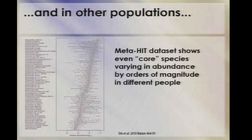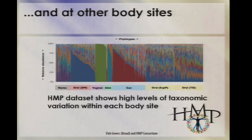MetaHITS saw the same thing in other populations. Even the species they define as core vary in abundance by orders of magnitude between different people, so anything that makes up 10% of the microbiome in one person is as rare as one cell in 10,000 in other people. The HMP has extended this to other body sites — as Curtis showed you, colored by bacterial genus — essentially even in one body site, any genus that you find a lot of in some people is very rare in others.